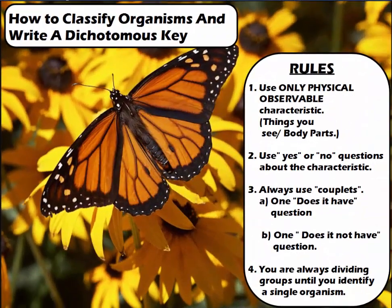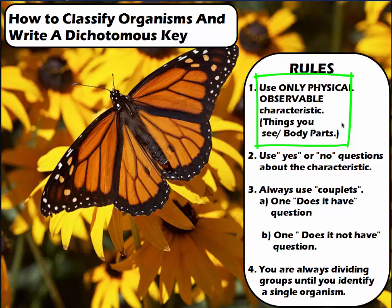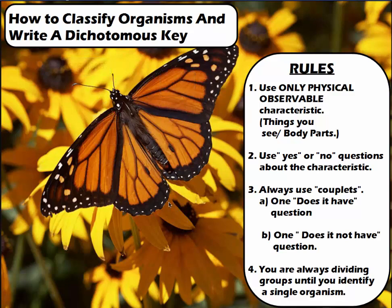When writing a dichotomous key, there are some rules you want to stick to for writing a basic one. First of all, you only want to use observable characteristics — things that you can see. Basically, you want to talk about structures or body parts. Because we can see these things and they're obvious, we want to use things like wings, hair, or antennae — things like that, as you can see on this beautiful monarch butterfly.